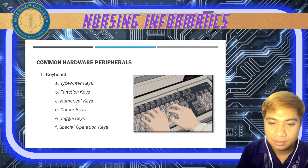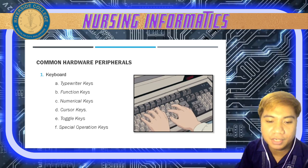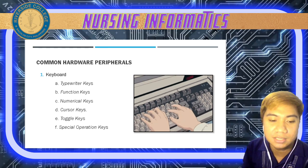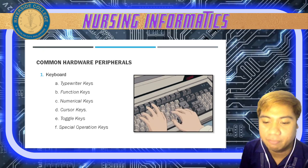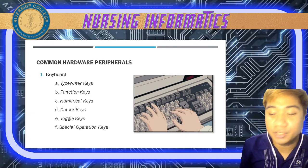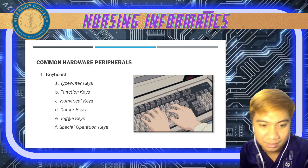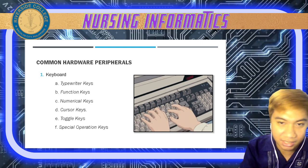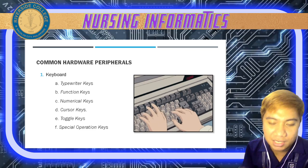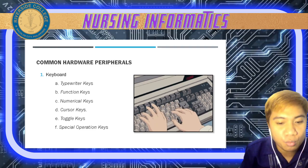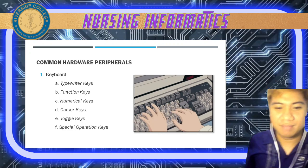The numeric keys — from the word numeric — form a calculator-type section that enables the user to enter numeric data. We have cursor keys, the arrow keys: up, down, left, right. Next are toggle keys — those that have dual purpose; when pressed once the function is on, and if pressed a second time it is off. Examples are Num Lock, Caps Lock, and Scroll Lock. Next are special operation keys such as Home, End, Print Screen, Delete, Backspace, Enter, and Escape.